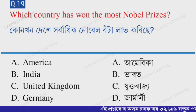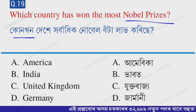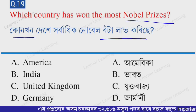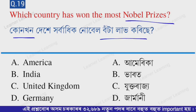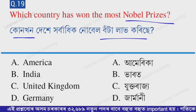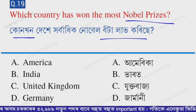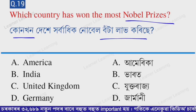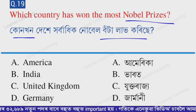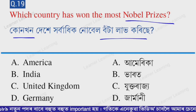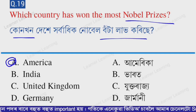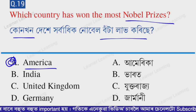Next question: Which country has earned the most Nobel Prizes? Options: A — America, B — India, C — United Kingdom, D — Germany. The correct option is option A — America. America has earned the most Nobel Prizes.